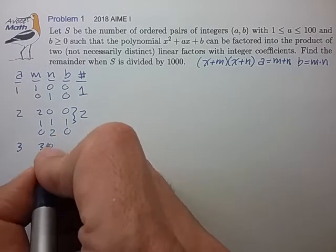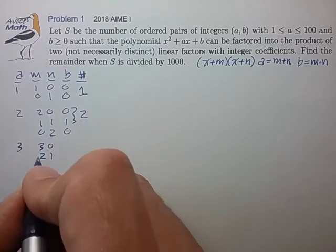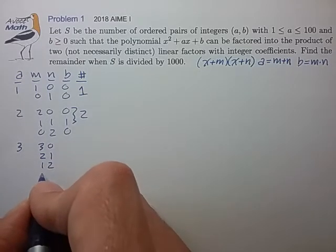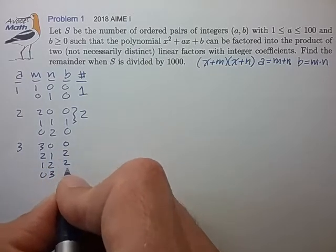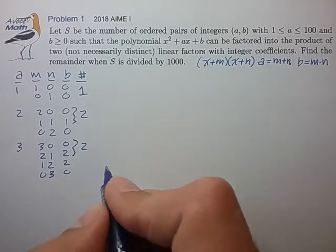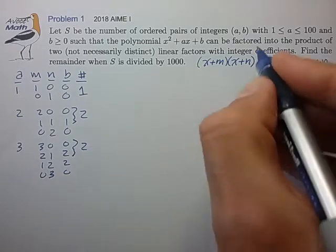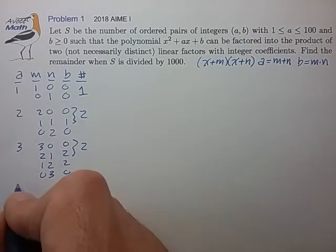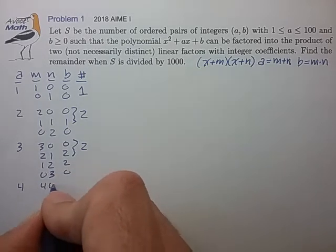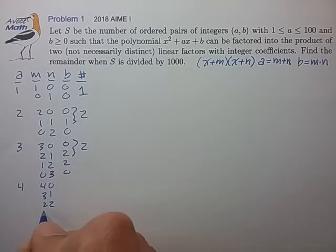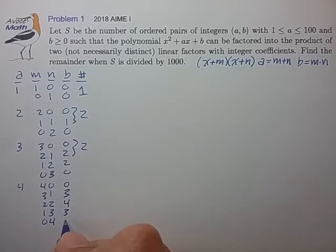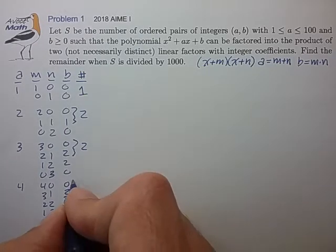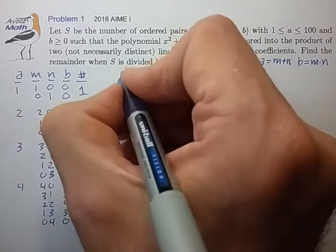For a = 3, we have these values for m and n, giving us b values of 0 and 2. Two such ordered pairs (a, b) with a = 3. For a = 4, the b values are 0, 3, and 4. Three such values in total.